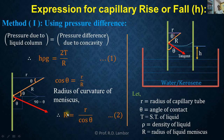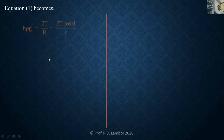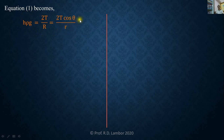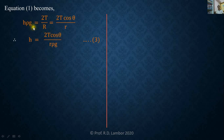Substituting the value of R into equation 1 (H·rho·g = 2T/R), we get the expression: capillary rise H = 2T·cos theta / (r·rho·g). This is the expression for capillary rise or capillary fall.